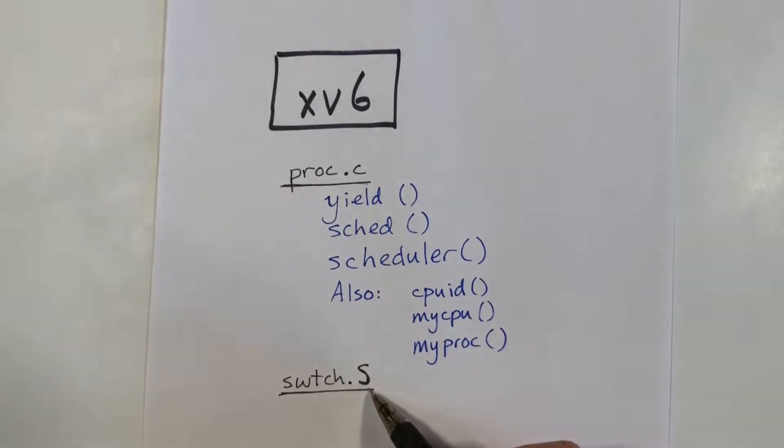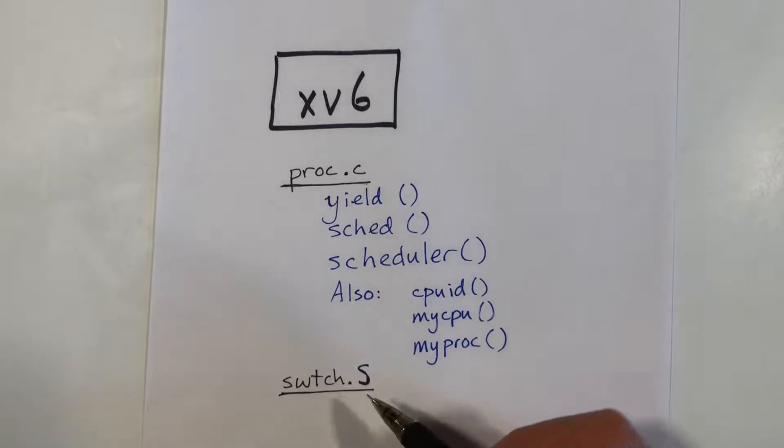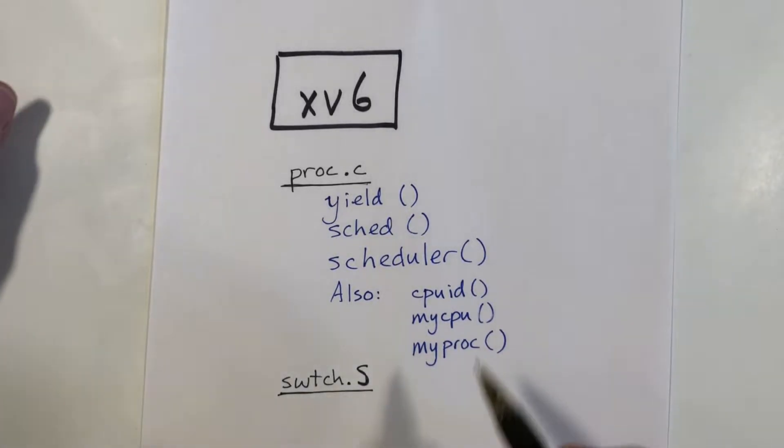And I will go over the assembly code that's in the switch.s file. So let's begin with these helper functions, since they're pretty straightforward and easy to get out of the way first.